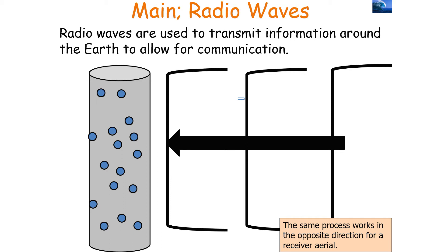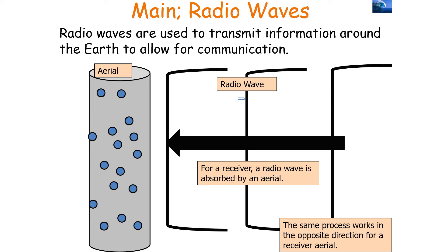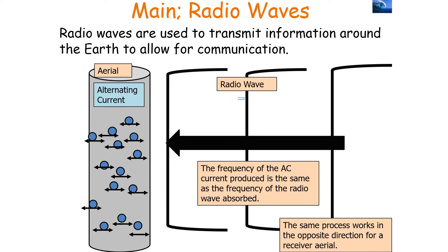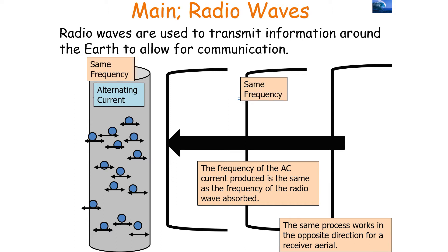It also works in the other direction with a receiver aerial. When a radio wave is absorbed by the aerial, the energy of the wave causes the electrons in the aerial to oscillate, producing an alternating current. The frequency of the alternating current produced is the same as the frequency of the radio wave absorbed. So a 50 Hz radio wave absorbed by the aerial produces a 50 Hz alternating current. In both cases, the frequency of the alternating current equals the frequency of the radio wave.